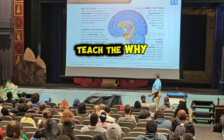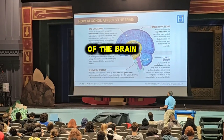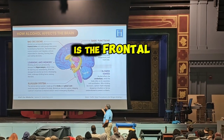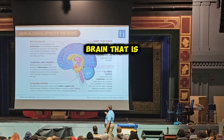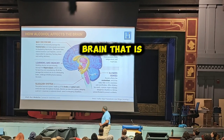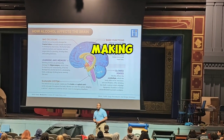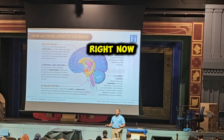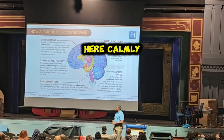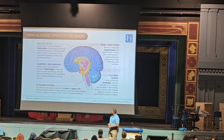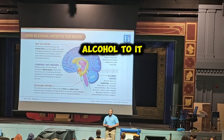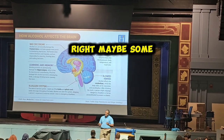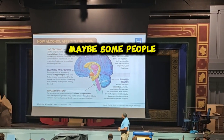I like to teach the why. There are two areas of the brain that alcohol affects the most. The first one is the frontal lobe — this is the part of the brain responsible for decision-making. Your frontal lobes are all working right now because everybody's sitting here calmly, paying attention for the most part. But if we were to introduce alcohol, things would start to get real silly — maybe some people running around, maybe some people acting out.